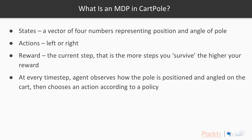Now let's turn to our most familiar environment, CartPole. The state is the vector of four numbers you get in the observation variable every time you call env.step — representing both the position and angle of the pole. The action space is moving the cart left or right. The reward is one per current step, meaning the more steps you survive, the higher your reward. At every time step, the agent observes how the pole is positioned and angled on the cart, computes a function of those variables, and chooses an action accordingly.